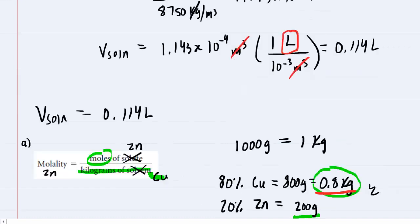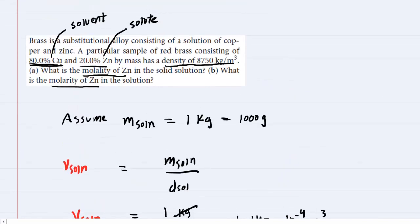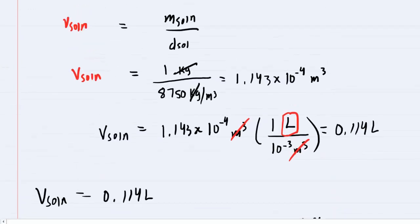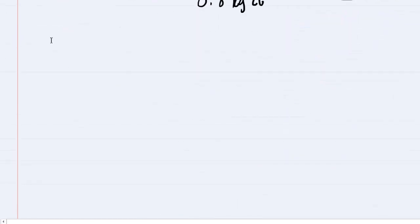We can now go on to part B, which wanted the molarity of zinc. Luckily we have obtained all the required information. There's a nice formula we can use for molarity. Molarity is the moles of solute, which is the zinc, divided by the liters of solution.